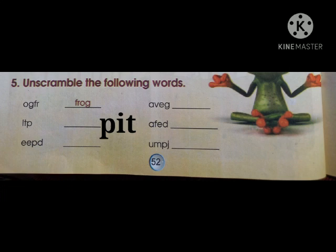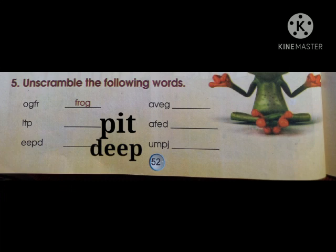The third word is D, double E, P. It is not making a word as given, so: D, double E, P — 'deep.' It is the word 'deep.'